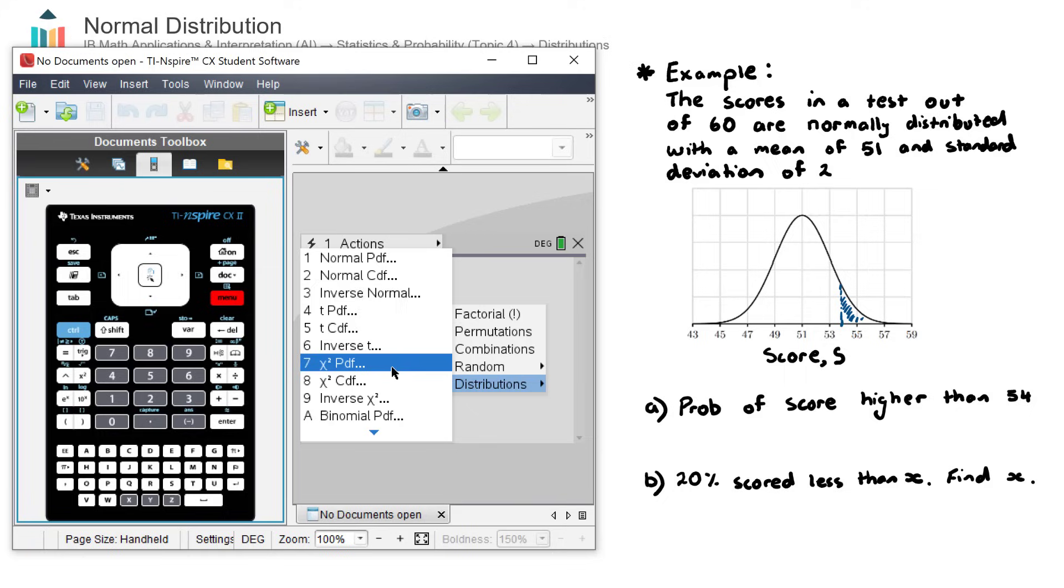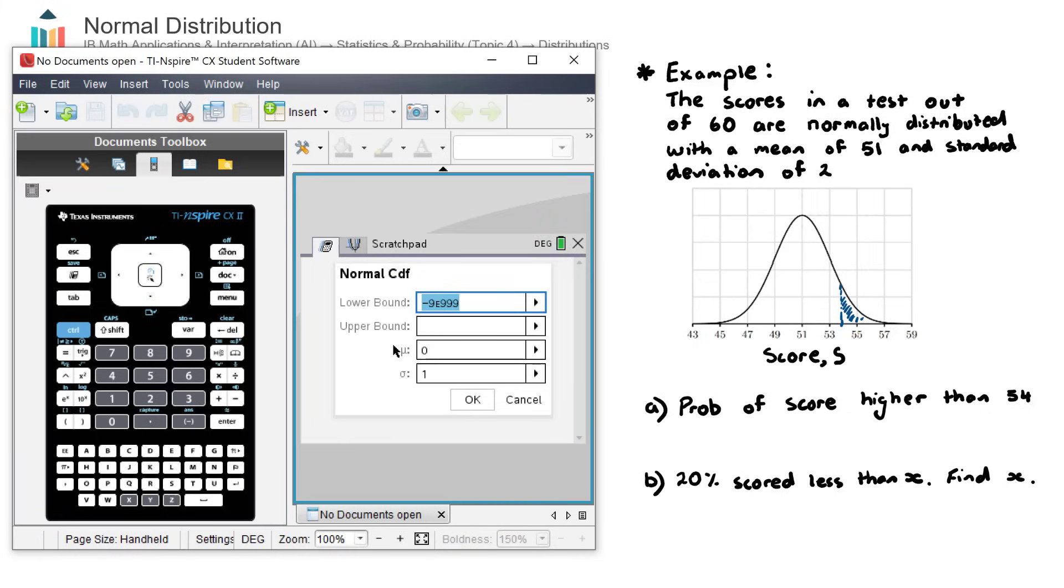Now for normal distribution questions, we'll either use the normal CDF command or the inverse normal command, either just one of those two. For this question here, we are going to use the normal CDF command because we are trying to find the area under the curve. And in part B, we'll look at the inverse normal. So normal CDF, let's choose that.